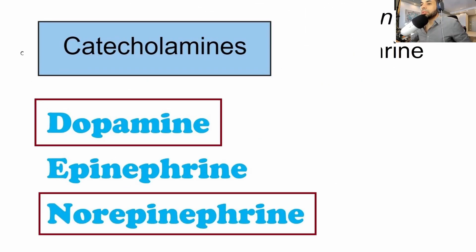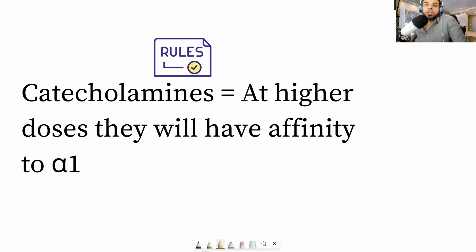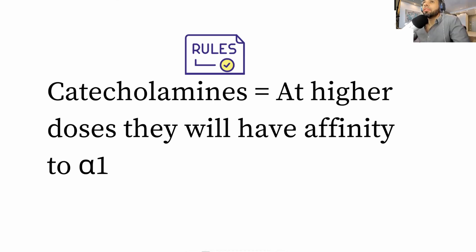Any catecholamine that we see on this list at high dosages will bind alpha one. So let me repeat. Catecholamines will bind alpha one at high dosages. Doesn't matter if it's dopamine, epinephrine, or norepinephrine, it will have affinity for alpha one. That's the first rule.